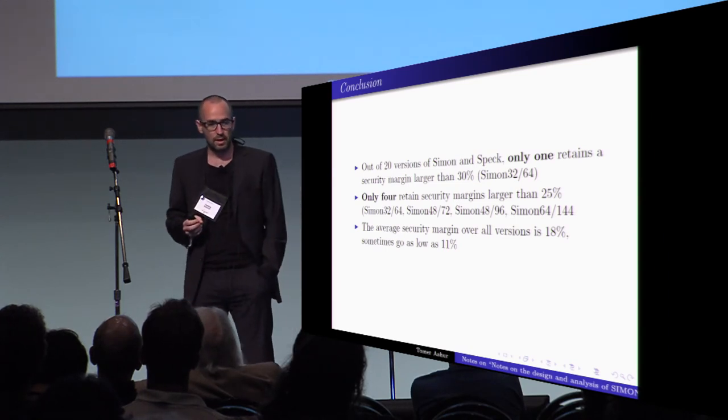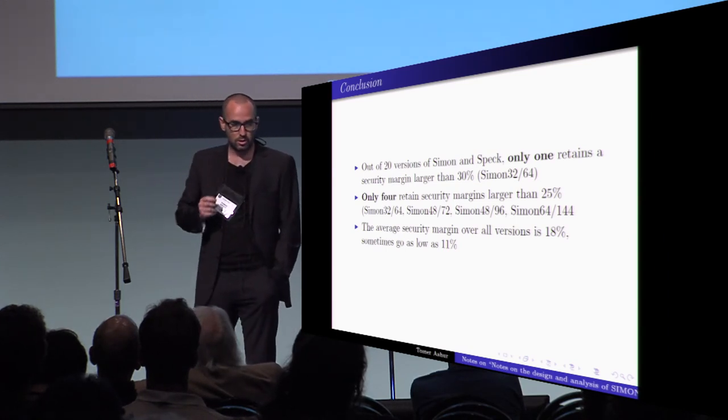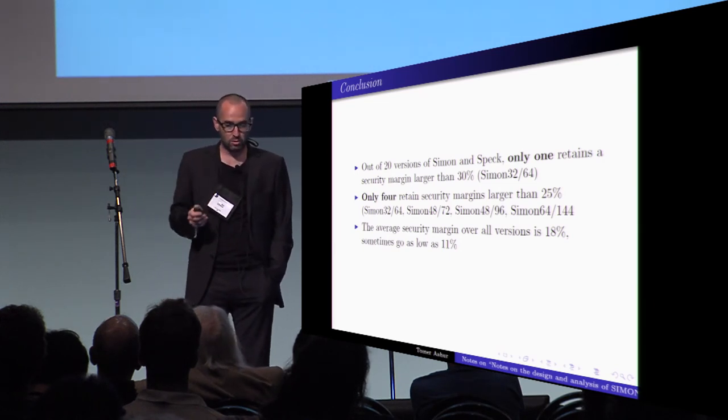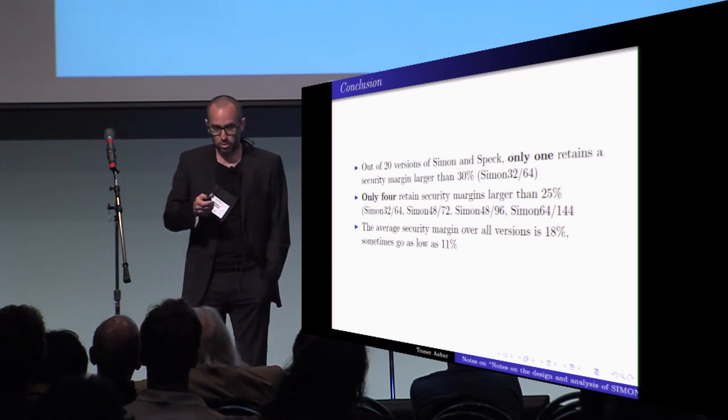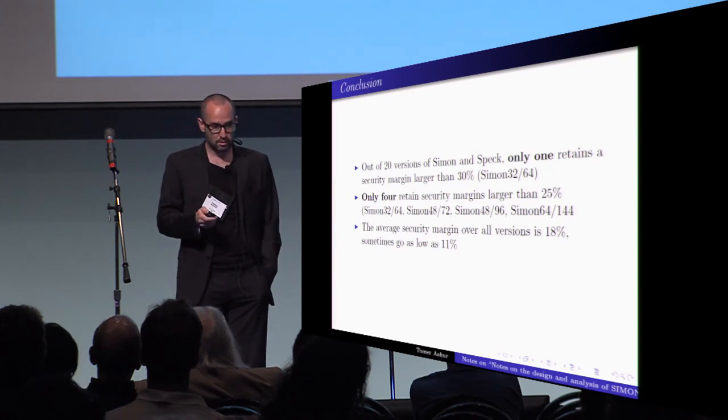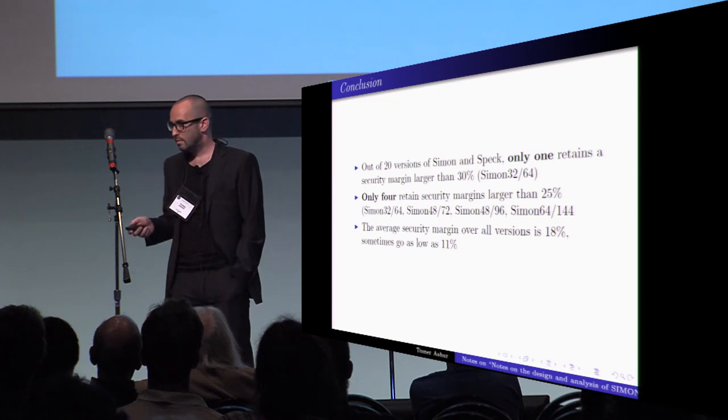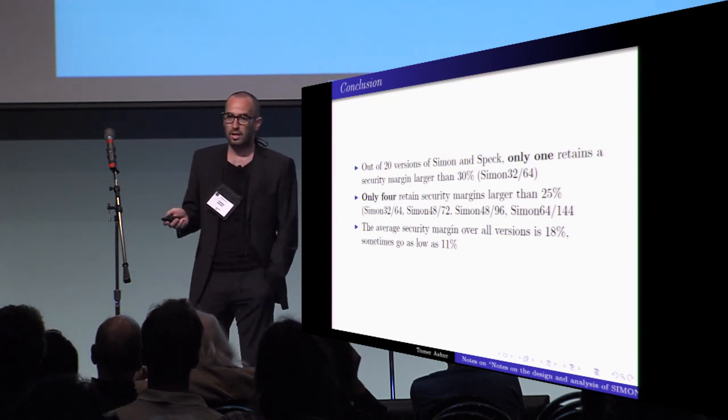so 10 for Simon, 10 for Spec, only one has a security margin larger than 30%, and only four have a security margin larger than 25%. The average is in fact 18%, and sometimes it is as low as 11%.